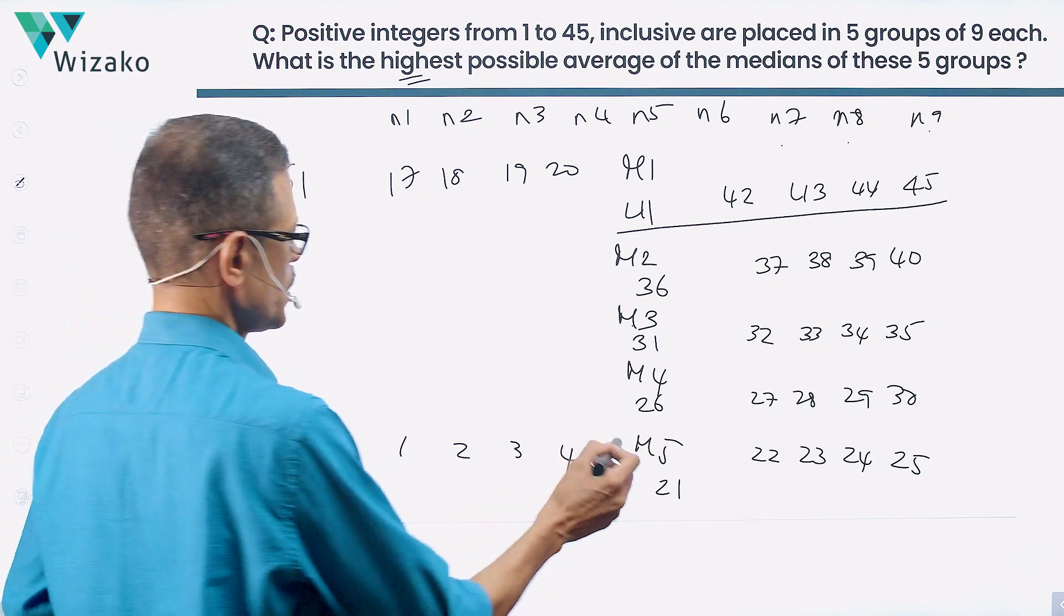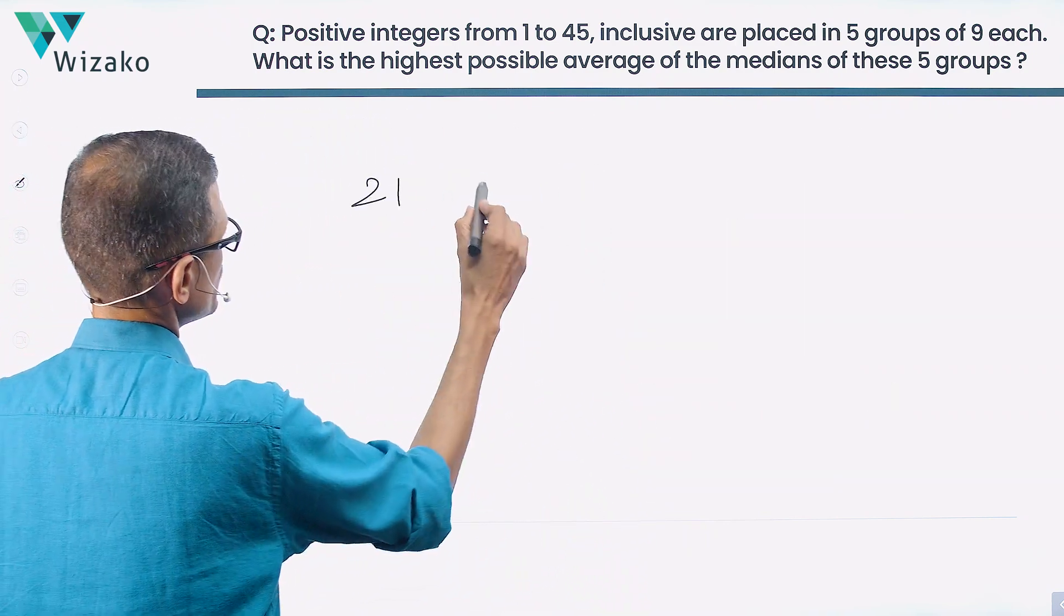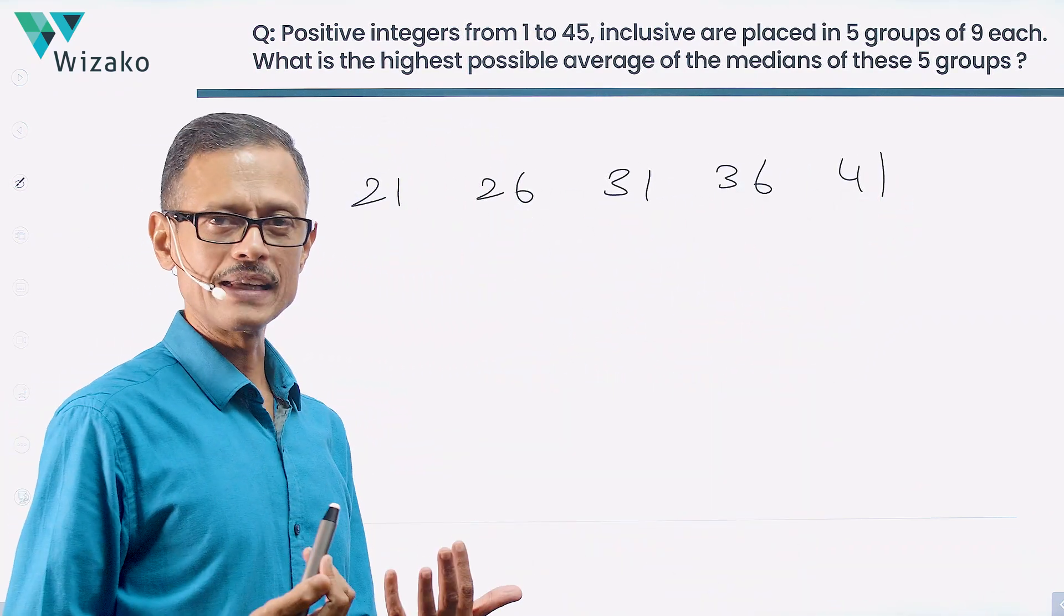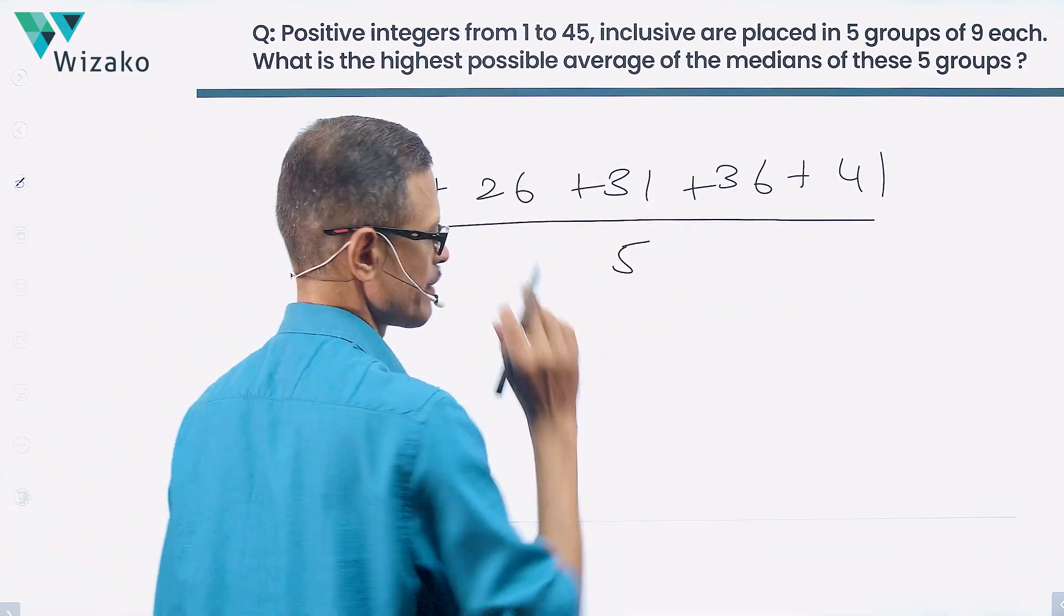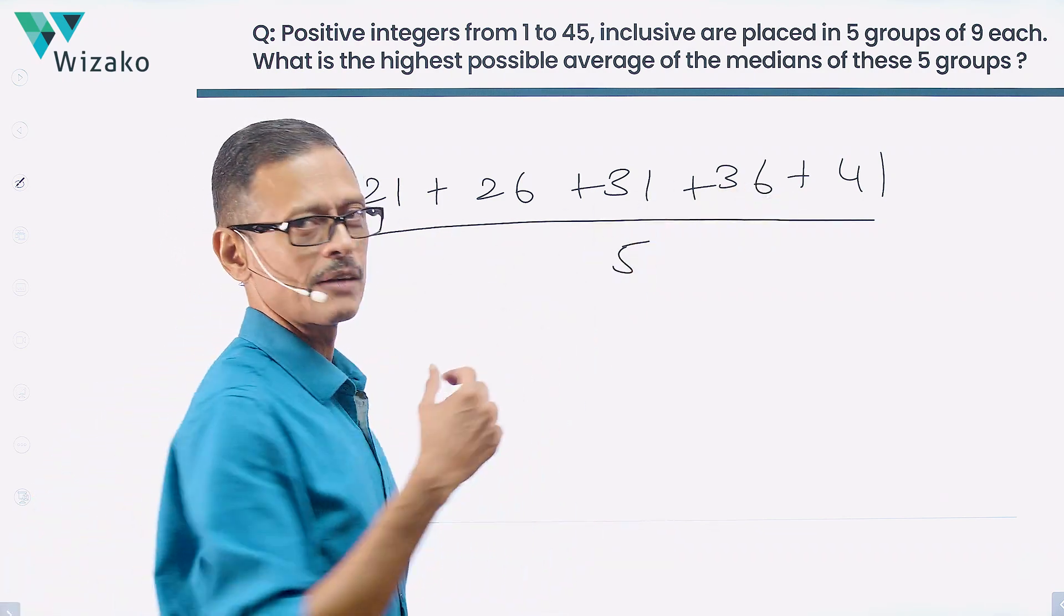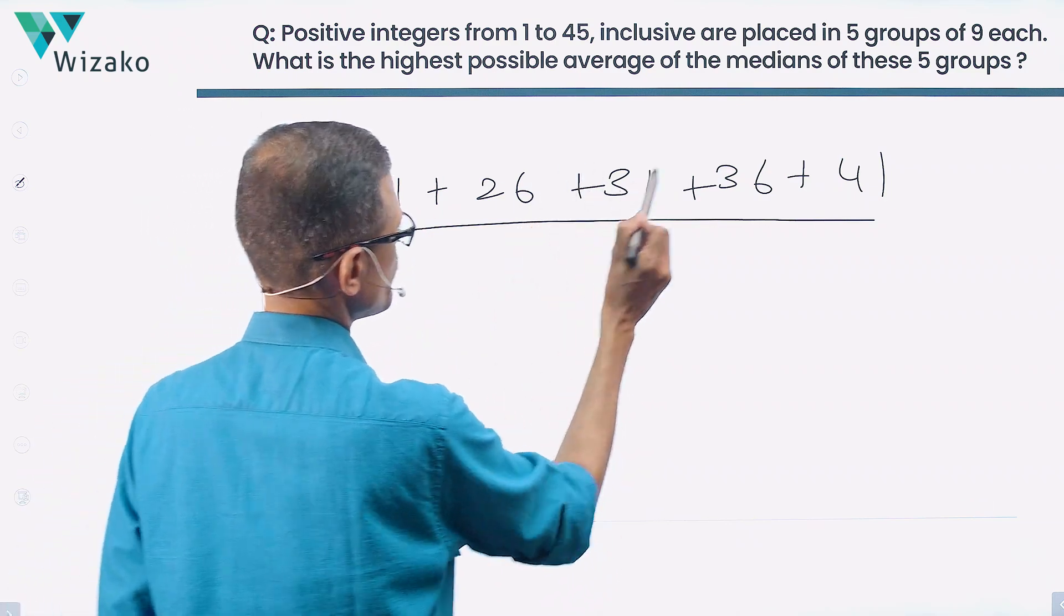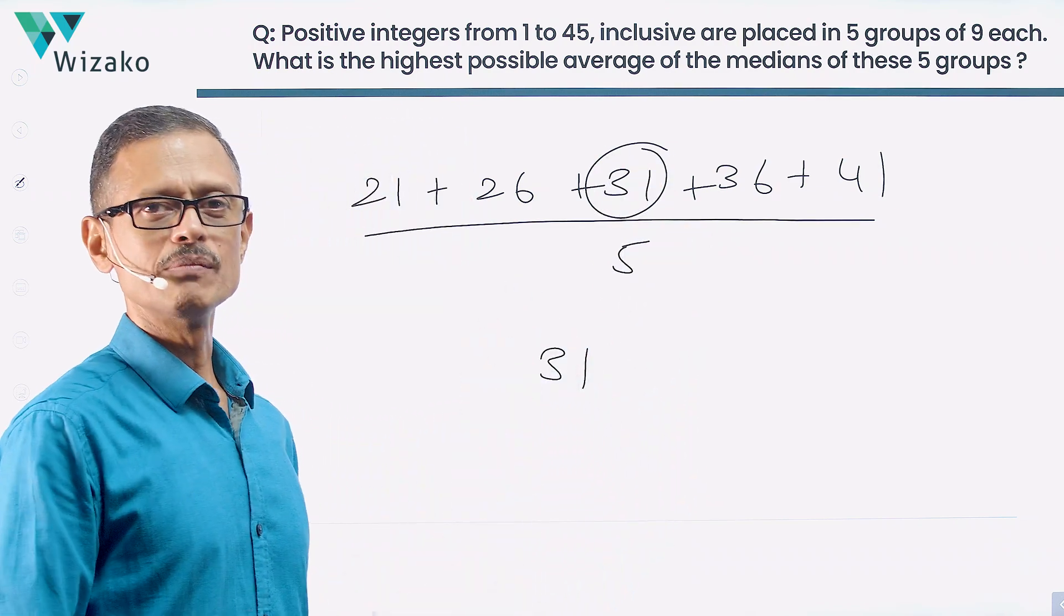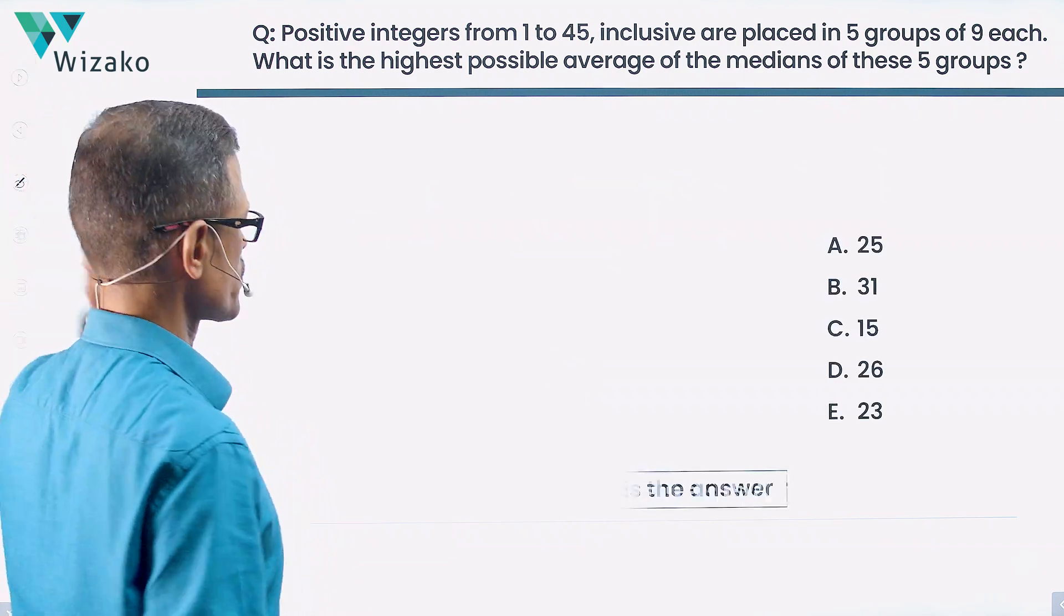So our highest possible medians are 21, 26, 31, 36, 41. So highest possible average for that is going to be the sum of these five values divided by five. We can add them up and find the answer. But we also know a trick. These numbers are all in an arithmetic progression with a common difference of five. There are odd number of terms in it. The middle number is going to be the average. So the highest possible average of the medians of these five groups is 31. Choice B is the correct answer to this question.